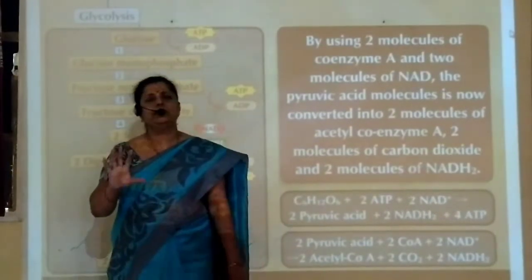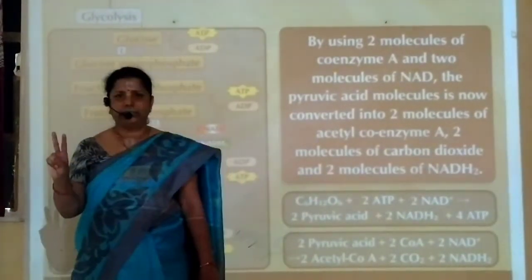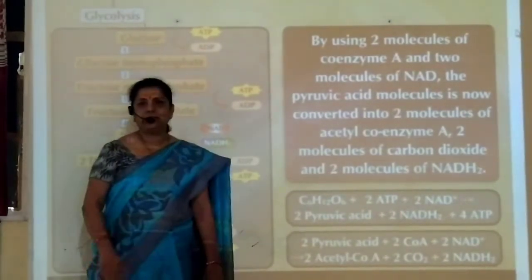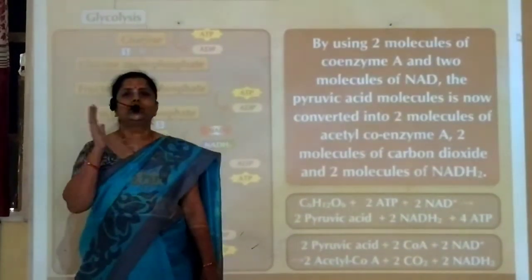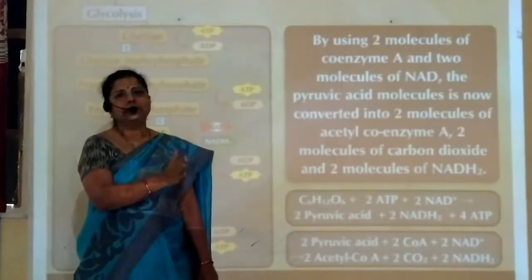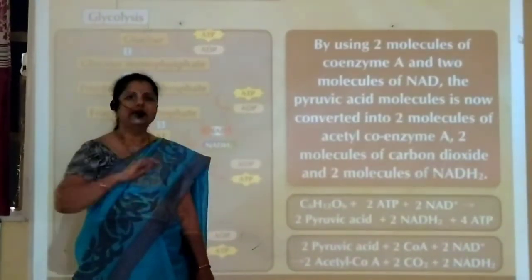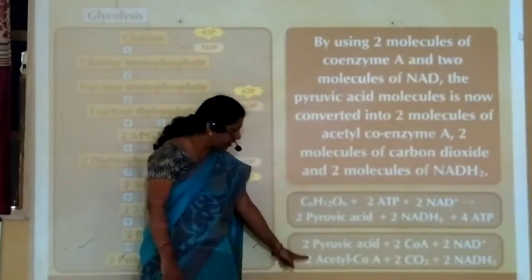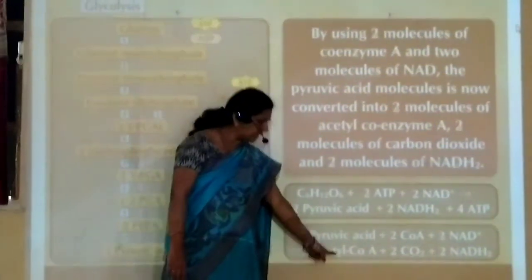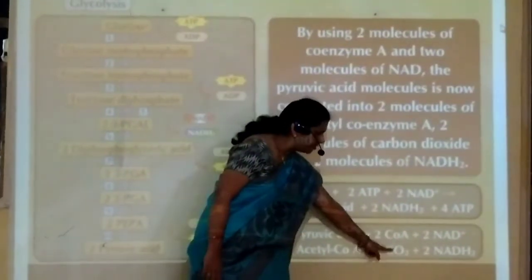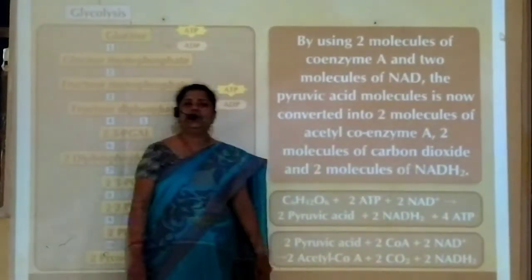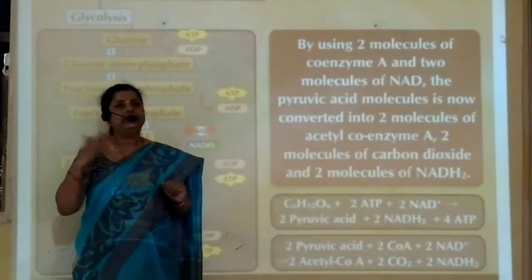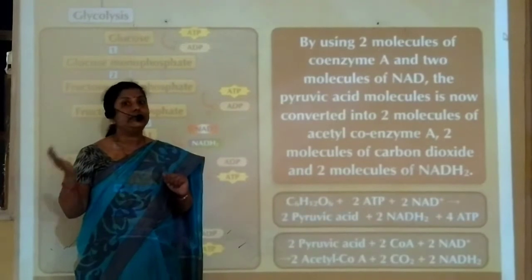To summarize glycolysis: glucose first gets converted into 2 molecules of pyruvic acid. Then, 2 molecules of pyruvic acid are converted into 2 molecules of acetyl-coenzyme A, 2 molecules of carbon dioxide, and 2 molecules of NADH2. Only 2 ATP molecules are released during glycolysis.